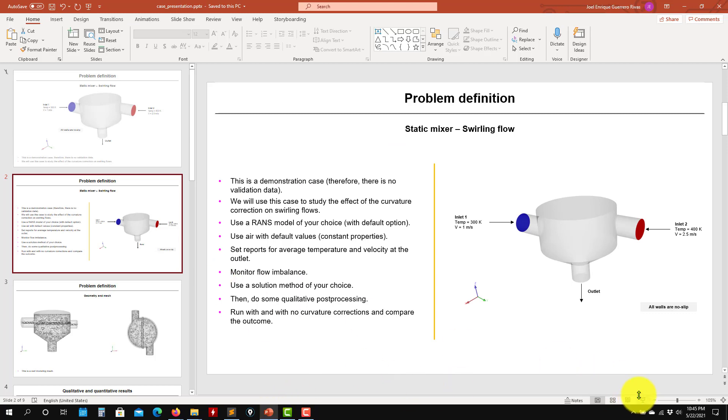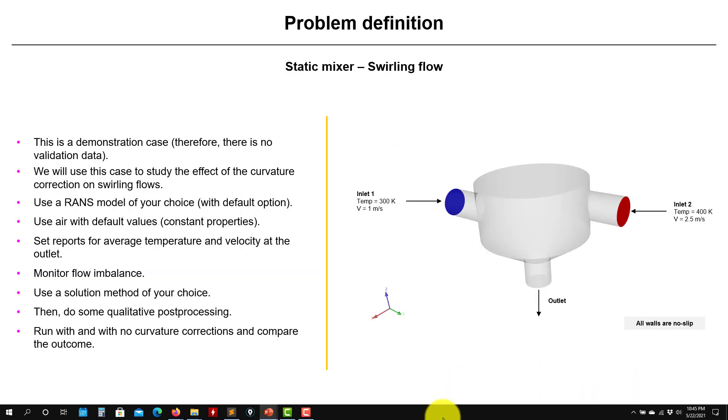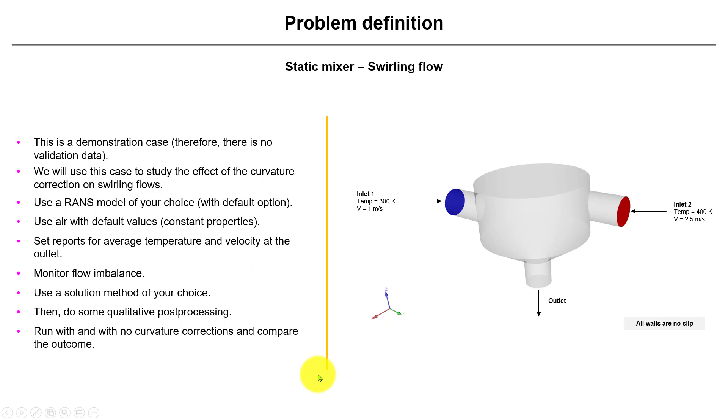Let me introduce you to this case. So we have this geometry, and usually this curvature correction, I have to say 90% of the time is related to this kind of flow. So you have mixing tanks, cyclones, generators, stuff like that, where you have this flow here and then you have kind of a tornado that will form here. A swirling flow. So usually you see that people use this correction here.